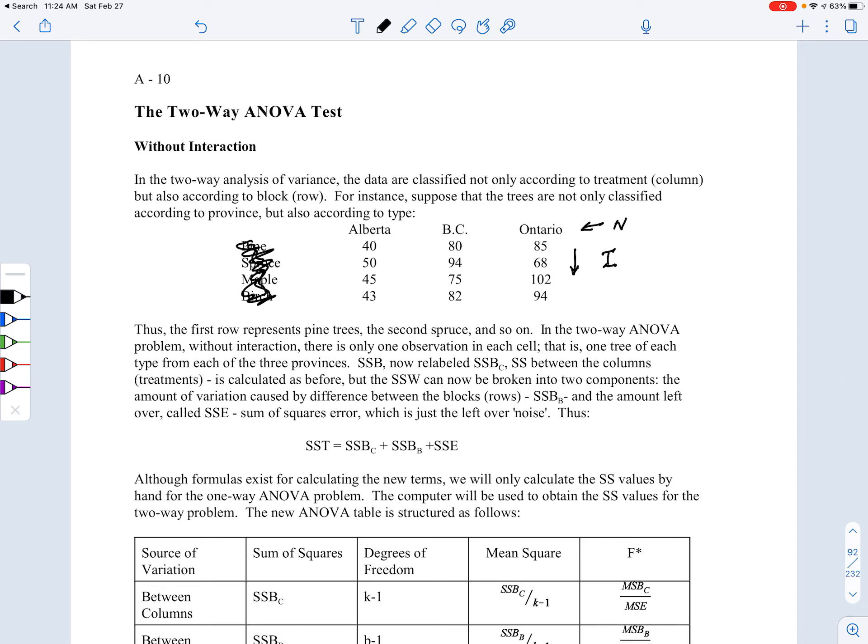I had originally crossed this out here but I'm going to uncross it now and say what if we have not just a one-way classification of the heights of the trees but a two-way classification? So we classify according to one nominal variable, which is the province, and then a second nominal variable, which is the type of tree. So what we have here then is pine trees, spruce trees, maple trees, and birch trees representing the rows, and the provinces representing the columns.